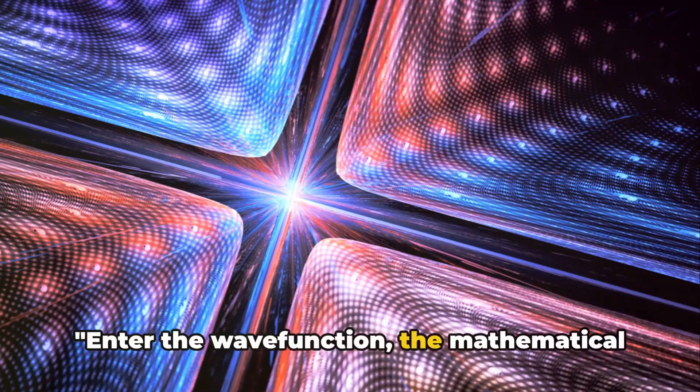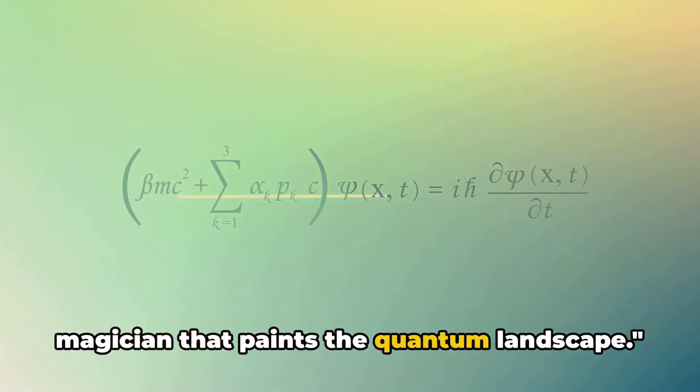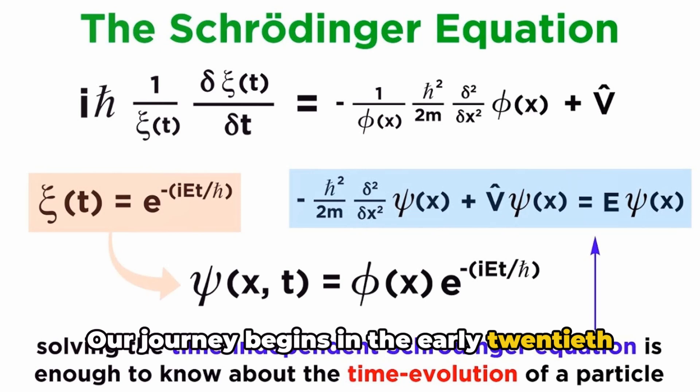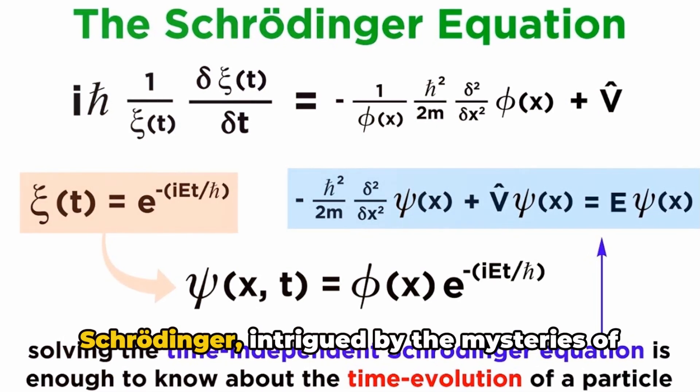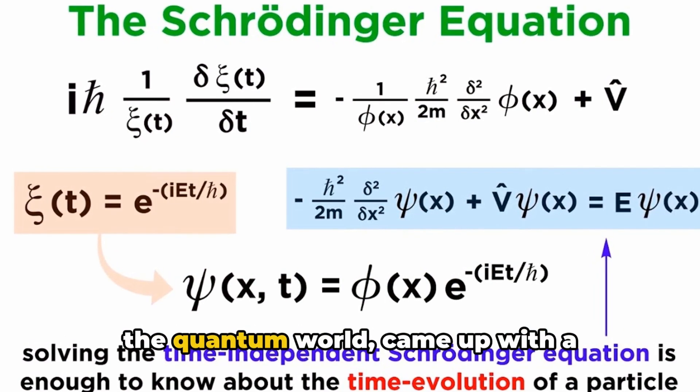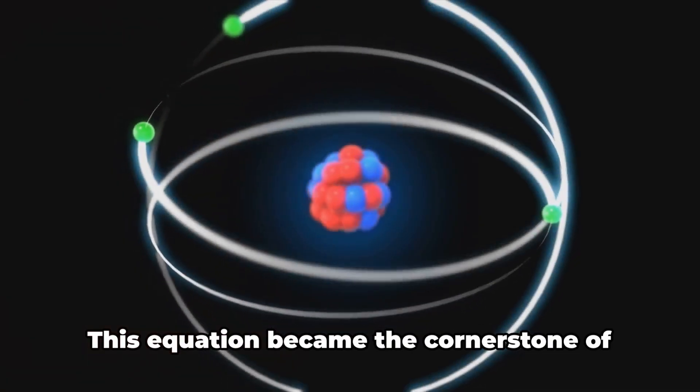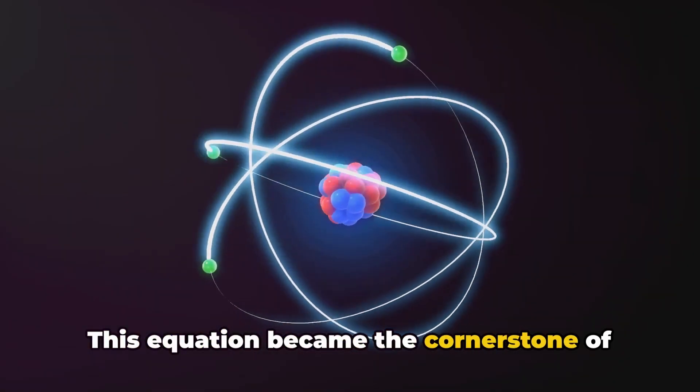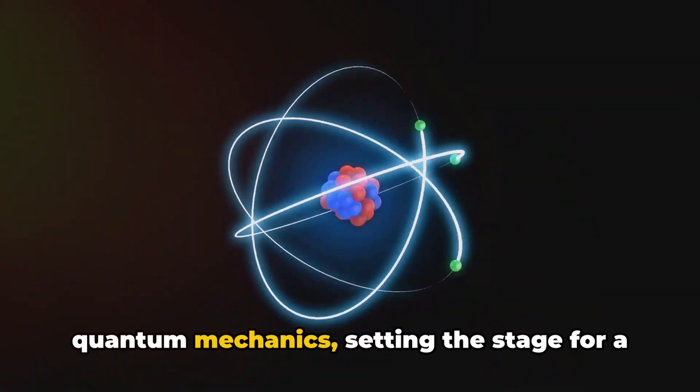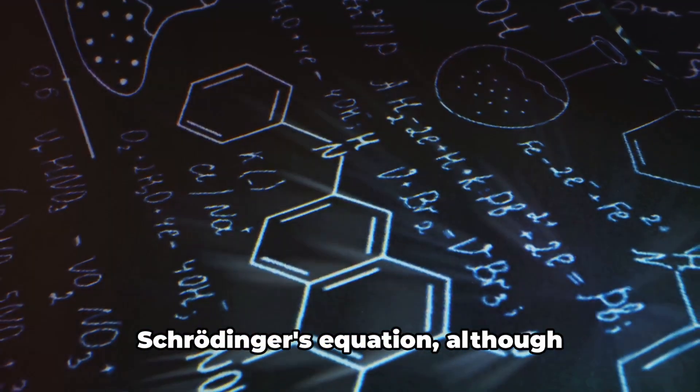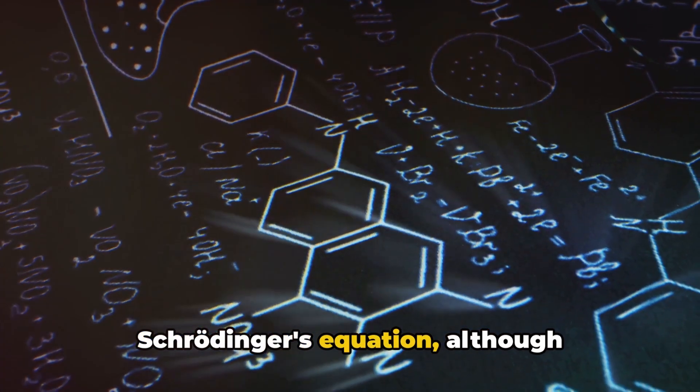Enter the wave function, the mathematical magician that paints the quantum landscape. Our journey begins in the early 20th century when a man named Erwin Schrödinger, intrigued by the mysteries of the quantum world, came up with a revolutionary equation. This equation became the cornerstone of quantum mechanics, setting the stage for a new era of scientific exploration.